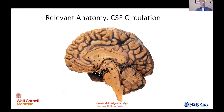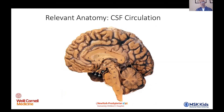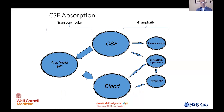Looking at an anatomical specimen here — just to point out a couple of things — the outlet foramina are extremely small relative to the volume of fluid they need to handle. In real time, the apertures of Magendie and Luschka measure in millimeters. Likewise, the aqueduct's normal diameter is about two to three millimeters in a non-pathologic state. It doesn't take much to block those off — whether it be protein, debris, blood, bacterial infection, inflammatory changes, or tumor cells — these get blocked off quite readily.